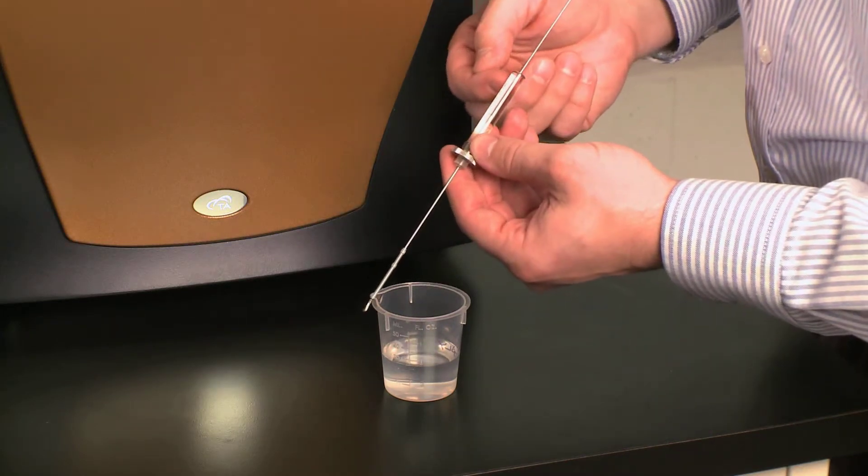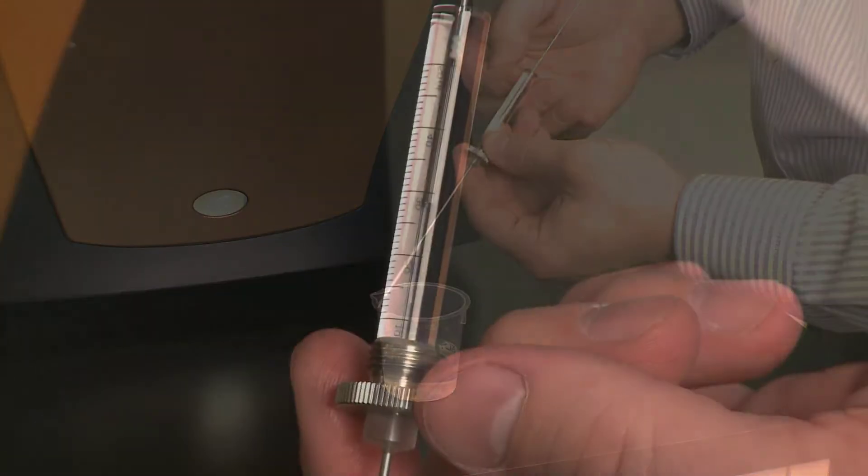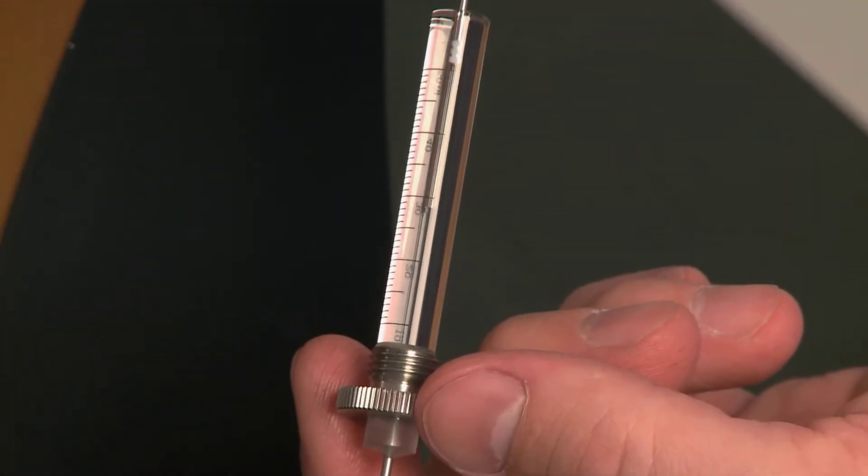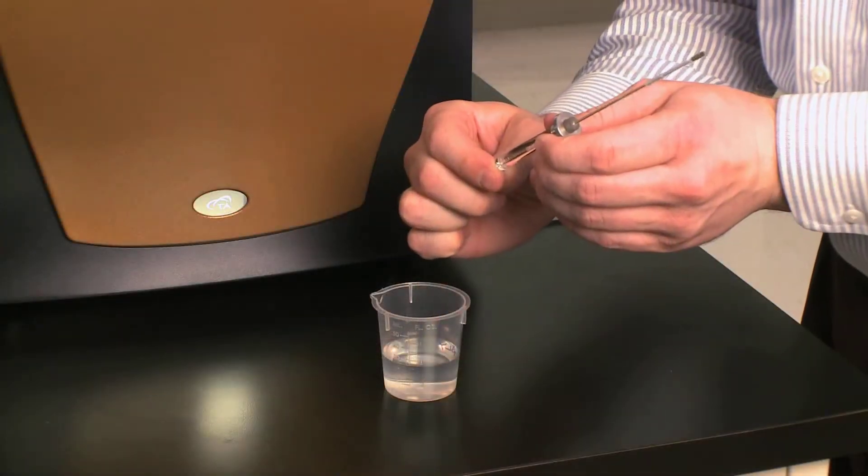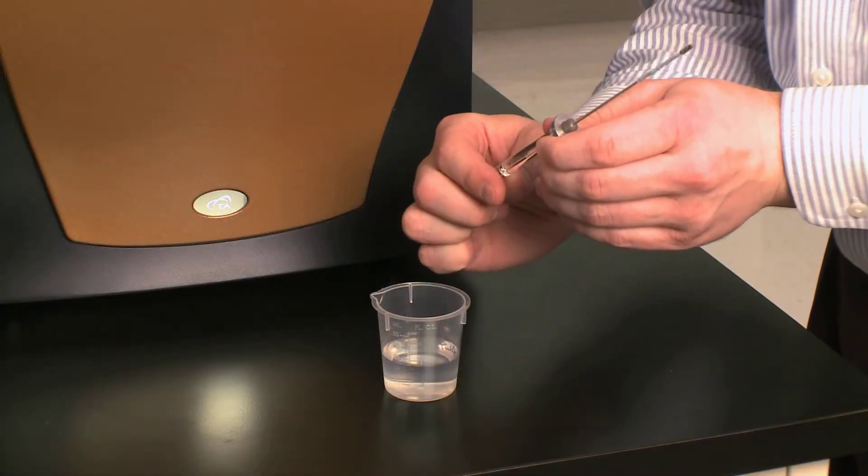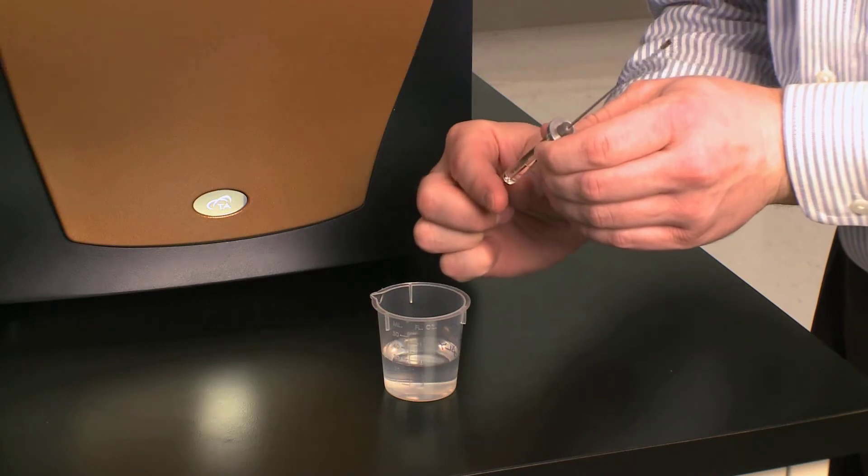And you see we have a big bubble between the end of the stopper and in the syringe. So what we have to do is tip it over and open the back end of the syringe and work out the water.